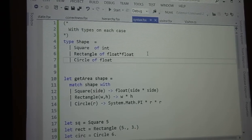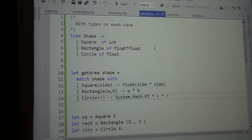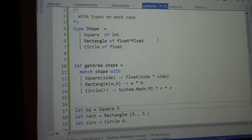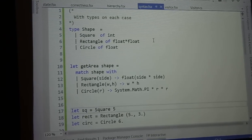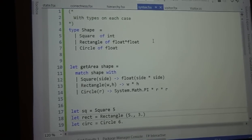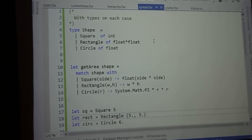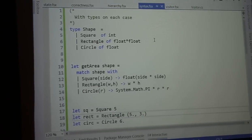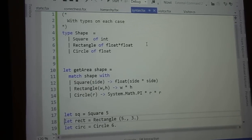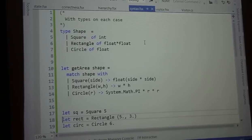So, here's kind of how you would use it. Here's defining a square. Let sq equals square five. So, that number is probably the length of that side, right? And then a rectangle, it's a type float float. That's a tuple.